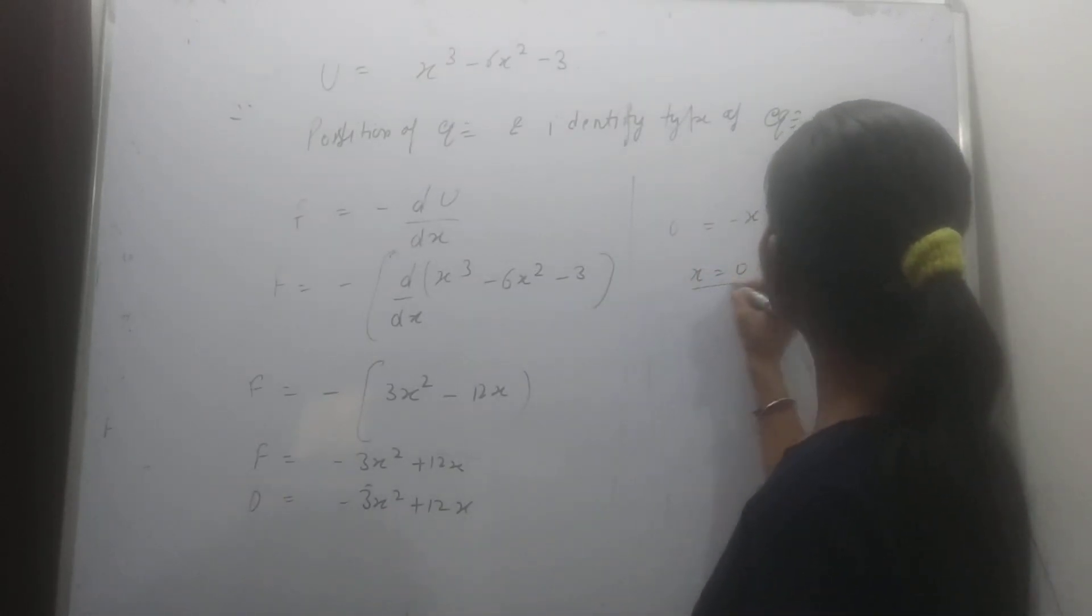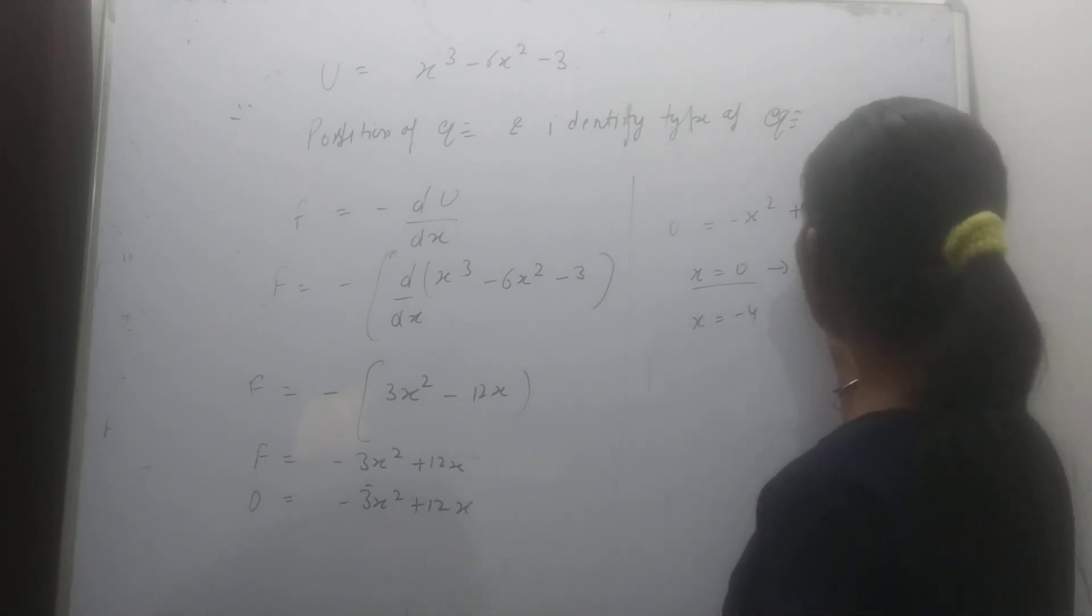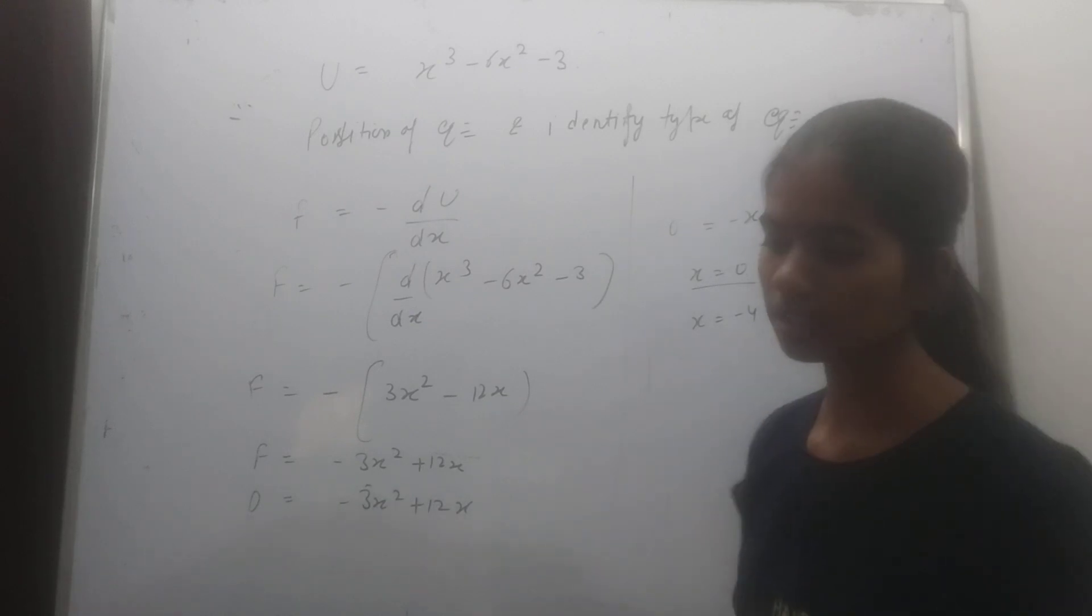x equal to 0 and x equal to minus 4. So that is the unstable equilibrium, so that is the conclusion.